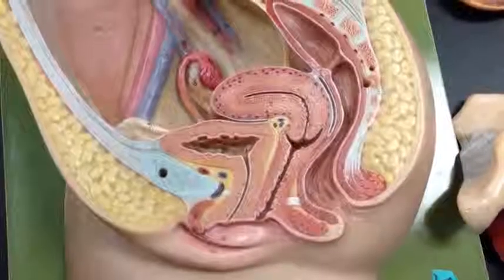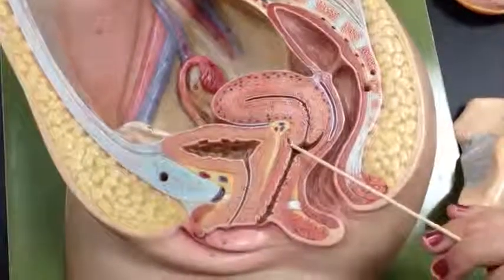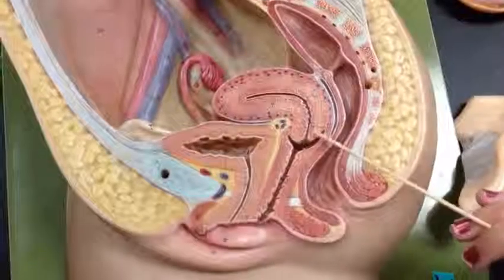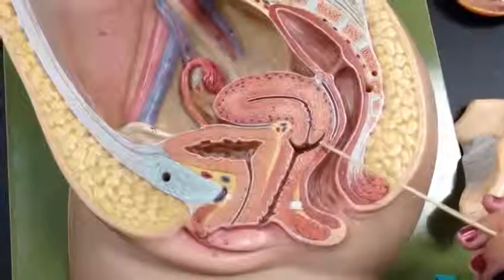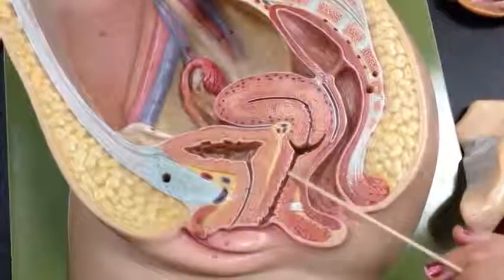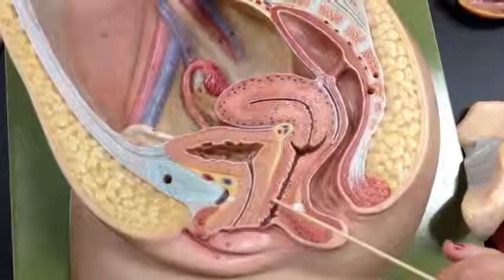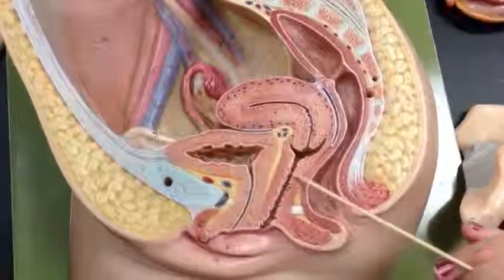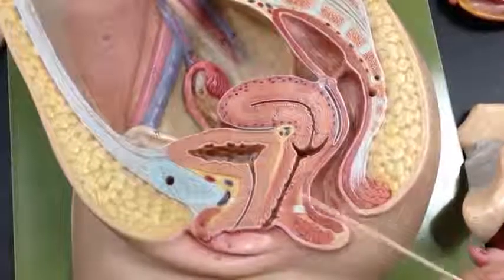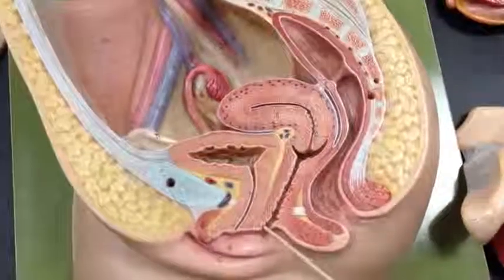And then this is the anterior fornix. Posterior fornix. This is the vagina. These are the rugae of the vagina. And this is the vaginal orifice.